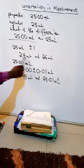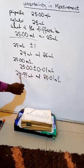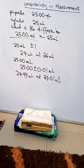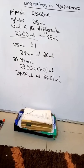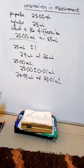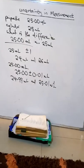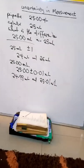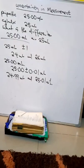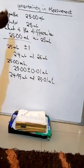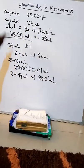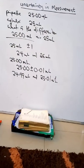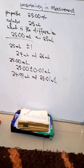You can see the difference: the cylinder gives a range of 24 to 26 milliliter, while the pipette gives 24.99 to 25.01 milliliter. This is how uncertainty in measurement works — it depends on the precision of the measuring device. Thanks for watching. In the next tutorial, we shall look at precision and accuracy.